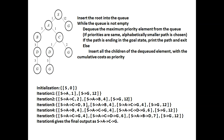We choose the maximum priority element, which is S→A→C with cost 2. C is not the goal, so we find its children D and G. The path S→A→C→D has cost 3 and S→A→C→G has cost 4. When priorities are equal, the alphabetically smaller path is chosen first, so S→A→B with cost 4 is inserted before S→A→C→G with cost 4.